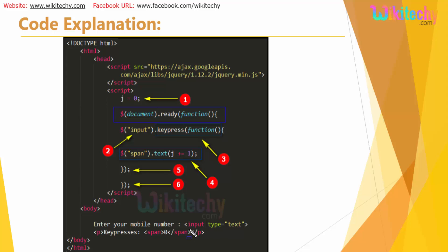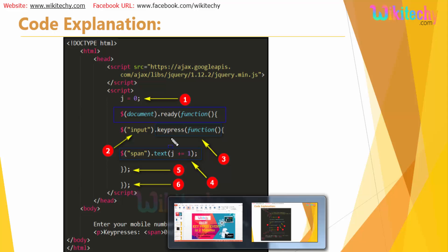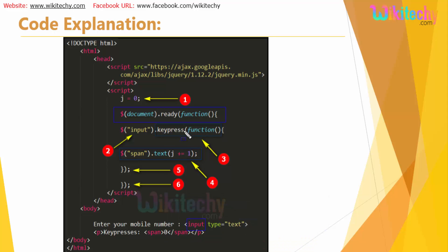You are able to see the input element here. On the .keypress() function — so when pressing a key in the input, automatically you'll have a span here. In this span, put the text value and increment it. These are the closing brackets for the keypress function and the document ready function.